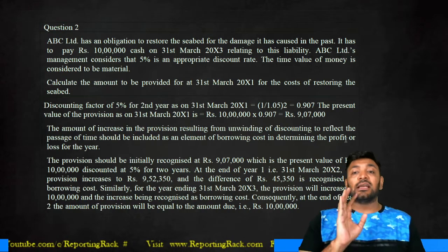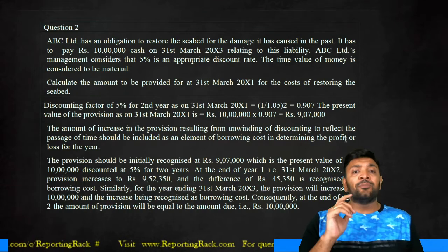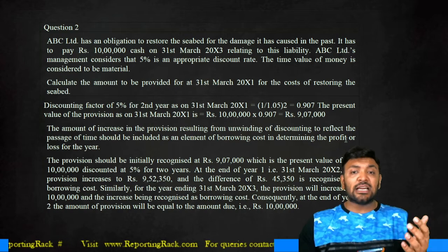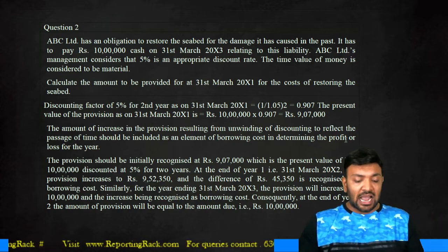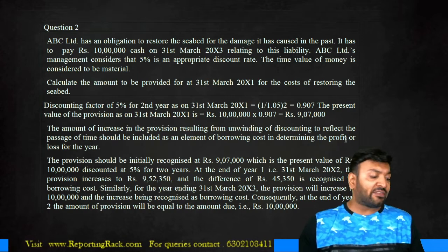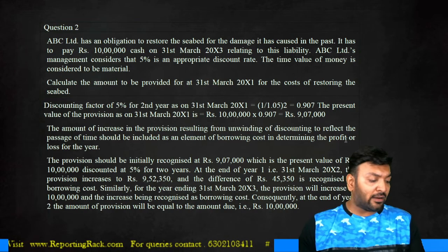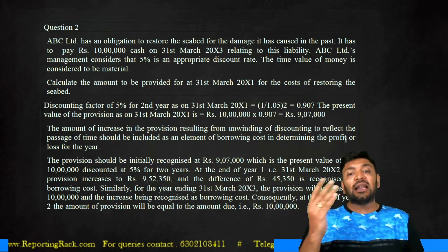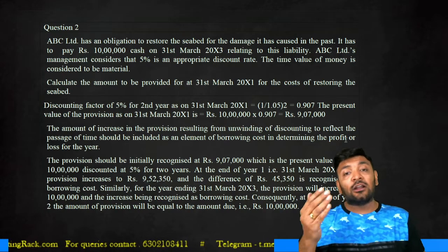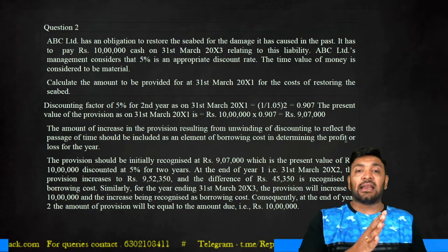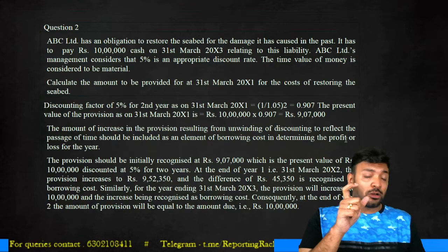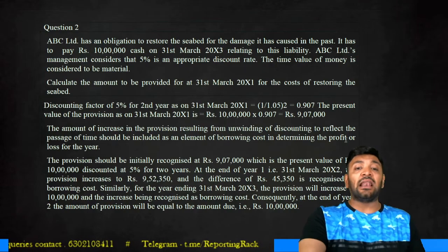The present value of the estimated dismantling or site restoration cost is 9 lakh 7,000, which should be recognized. Every year, I will recognize an interest cost — in 2011-12, I will recognize 5% interest as finance cost. The following year, again 5%, so that by the end of 2013 I get back the full 10 lakhs. Every year, the interest cost should be charged to profit and loss as finance cost.